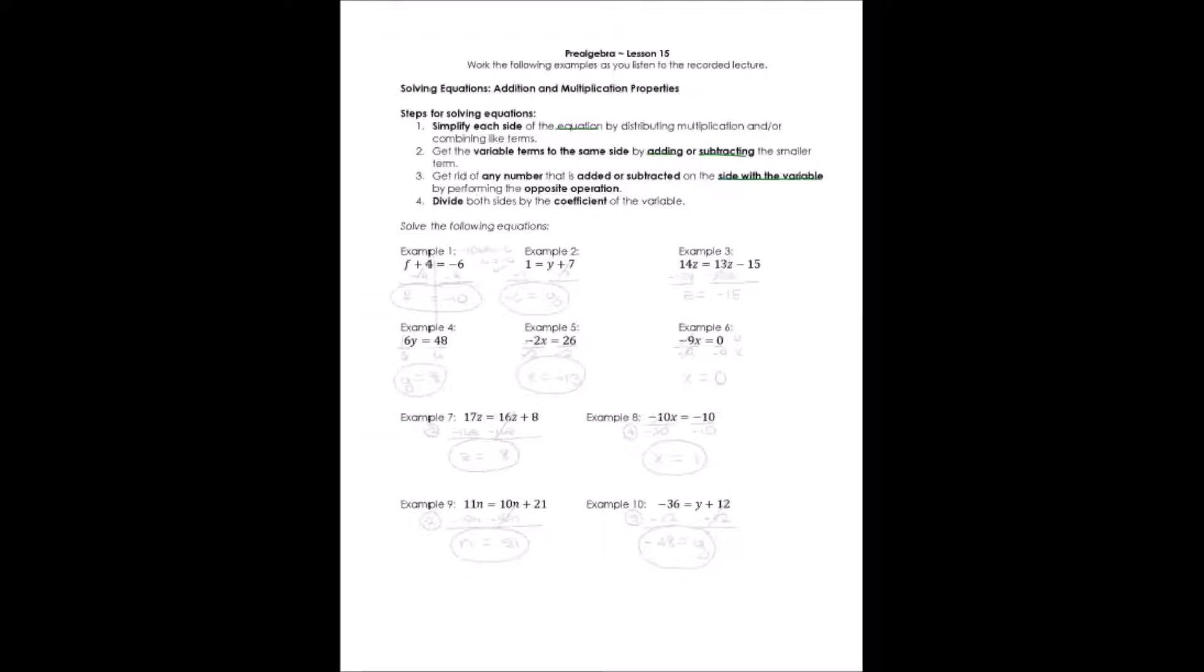For the example number one, it says f plus four equals negative six. Now, keep in mind, we're splitting this equation into two parts right here at the equal sign. We can do the same thing to both sides of an equation, and it still maintains an equivalency. It's still equal. That's why equations are so special to us is because we have that ability where we don't have that ability if it is an expression which doesn't have an equal sign.